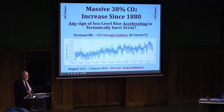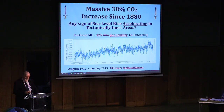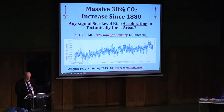This is Portland, Maine, on the Gulf of Maine — also tectonically inert. You see wide spreads here because the tide range in Portland, Maine is over three meters every day. However, this is still a linear rise, and it's 125 millimeters per century. The last 25 years in Portland, Maine, sea level has risen exactly five millimeters. If you do the math, that is two centimeters for 100 years over the last 25 years.